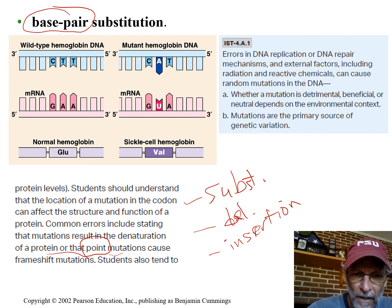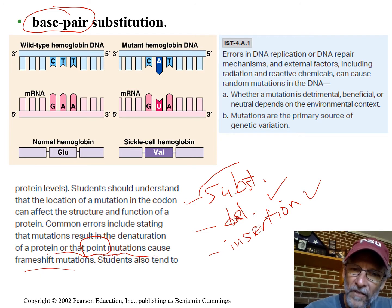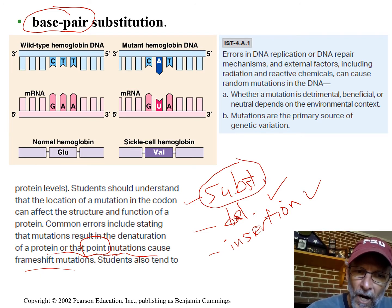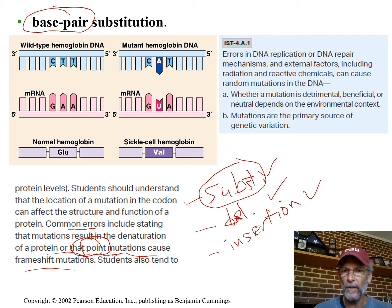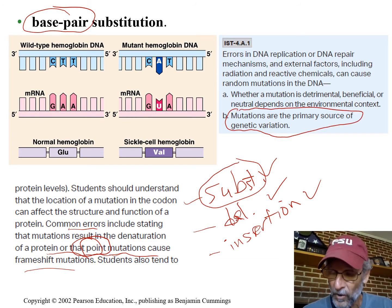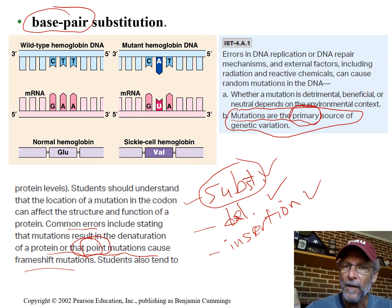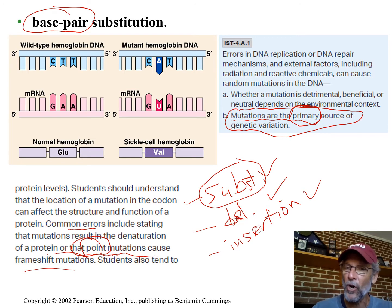A common error is that all point mutations cause frame shifts. Deletion and insertion would cause frame shifts, but substitution wouldn't. Also remember: mutations are at the heart of genetic variation. Without mutations creating different genes, it doesn't matter how much you shuffle them around — if they're all the same. All the rest is just recombination shuffling.